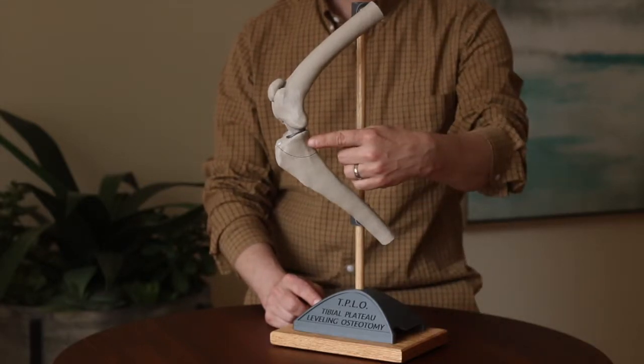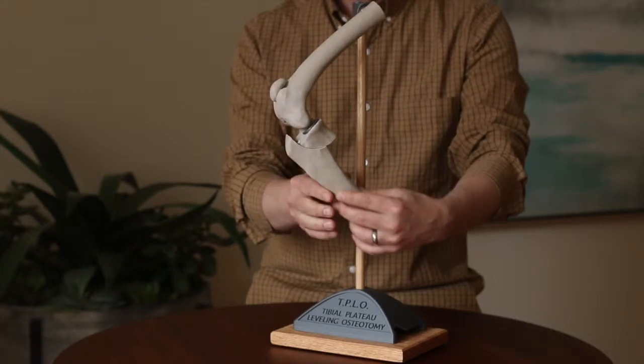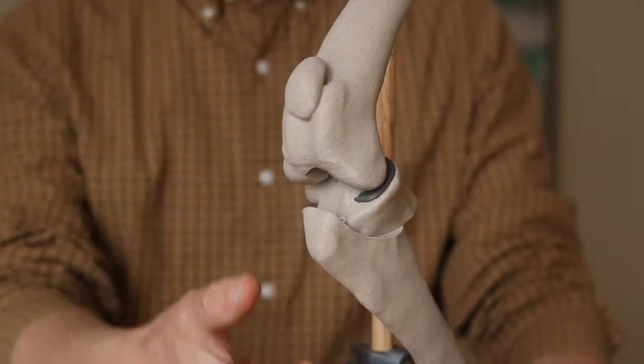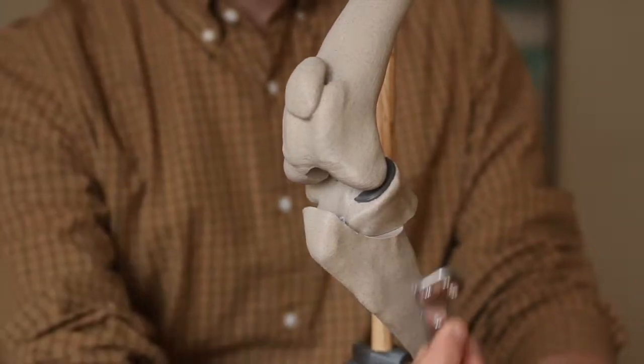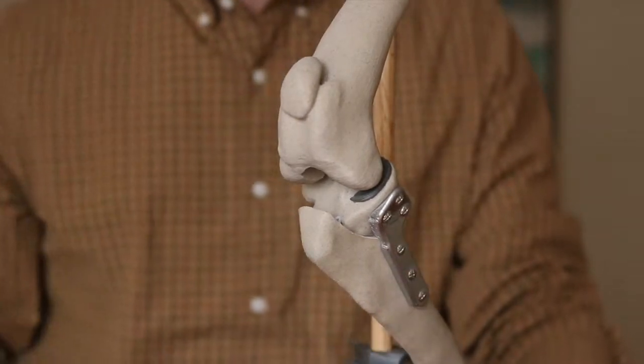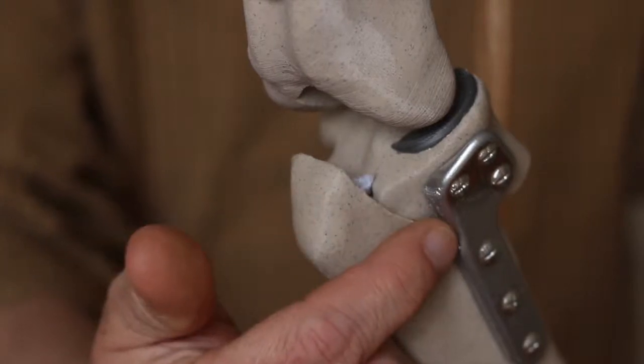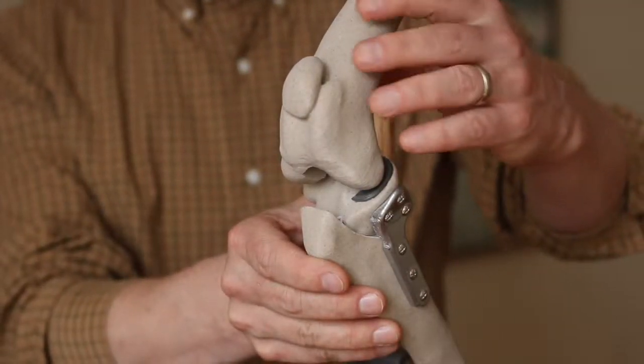And then this piece of bone is rotated by 30 degrees and it ends up in this position. Now we've cut this bone into two pieces, so we have to hold it together, and we do that using a steel plate and screws—just like if you had a broken bone. And that plate and screws holds this together until the body fuses the bone back together, and it takes about two months.